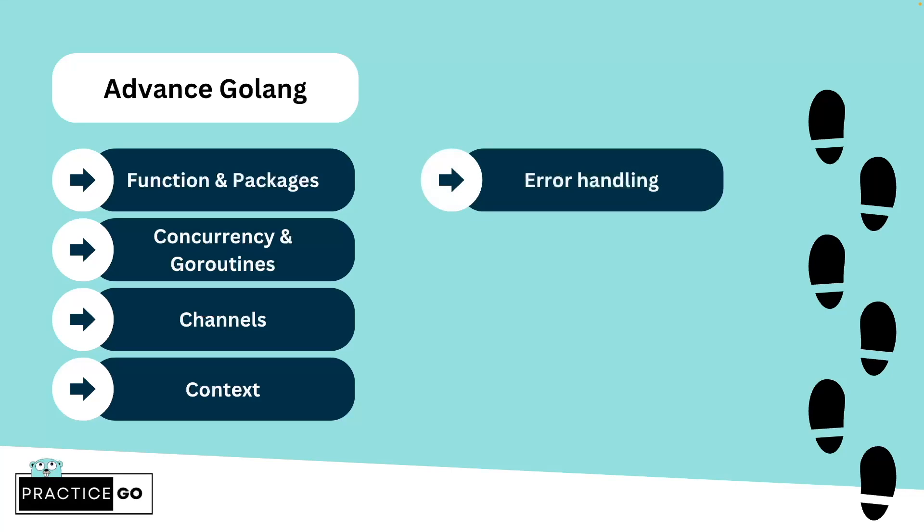Then we have error handling. Golang forces you to handle all errors — there is no try-catch or try-catch-finally block. All functions return errors and you have to handle them explicitly. In the beginning you will find it a little irritating, but with time you will understand its advantages: it improves readability and gives you a clear sense of what each function is returning.